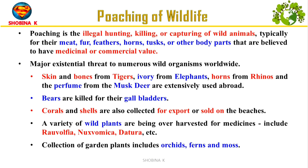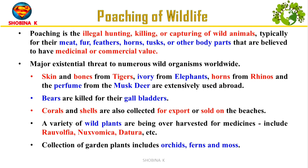Poaching of wildlife refers to the illegal hunting, capturing or killing of wild animals, often for their valuable parts such as ivory, skins or for medicinal purposes. Examples include tigers poached for skin and bones, elephants targeted for ivory tusks, rhinos killed for their horns, musk deer sought for perfume glands, bears poached for gallbladders, corals and shells collected illegally, and wild plants like Rauwolfia and Datura overharvested for medicinal use, along with orchids, ferns and moss collected for commercial sale.